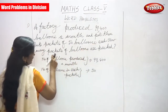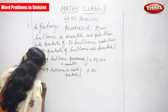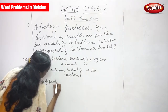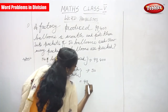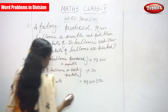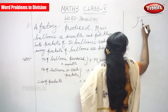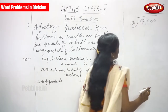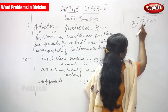You will find how many packets of balloons are packed. Therefore, number of packets is equal to 99,400 divided by 50. I will do the division here. First, you check the first digit. Take the number 9.